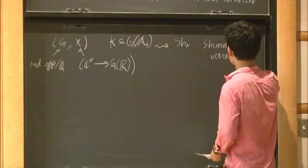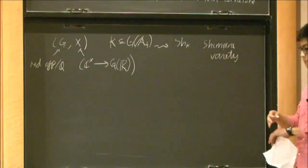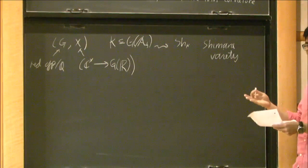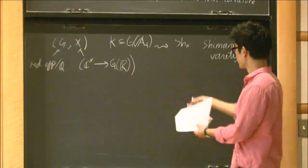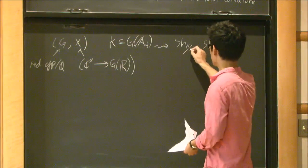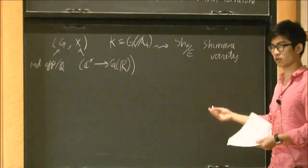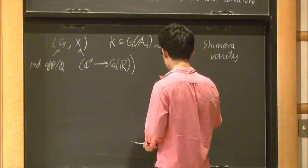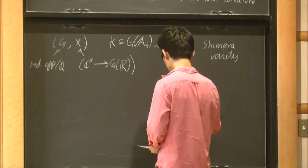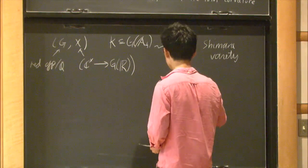As before, this starts off life as a quotient of some complex manifold by a discrete group acting on it. But the magic thing is that these are all algebraic, so they're defined over some canonical number field. And again, you can form this tower over all compact opens.